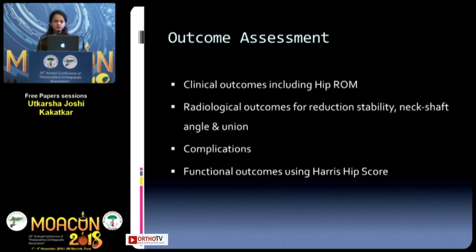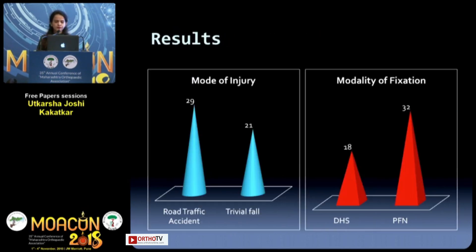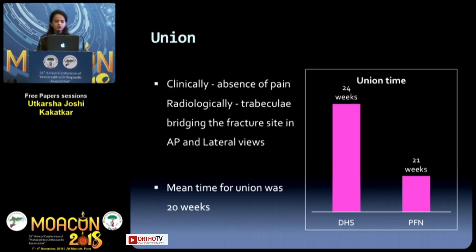The outcomes assessed were clinical outcomes, radiological outcomes, complications, and functional outcomes using the Harris hip score. Results showed 29 patients were with road traffic accidents and 21 with a trivial fall. 32 patients were fixed using the proximal femoral nail and 18 with the DHS. Union was checked clinically by absence of pain and radiologically by the presence of trabeculae bridging the fracture site on AP and lateral views, with a mean time of union of 20 weeks.